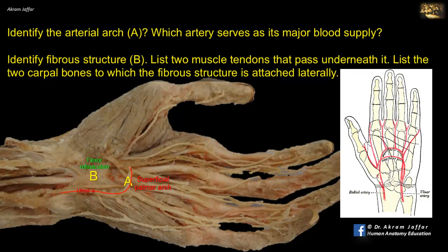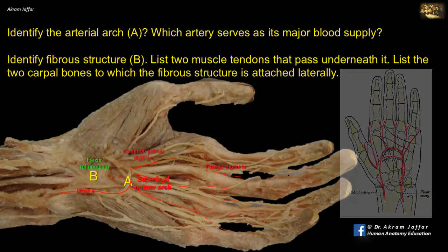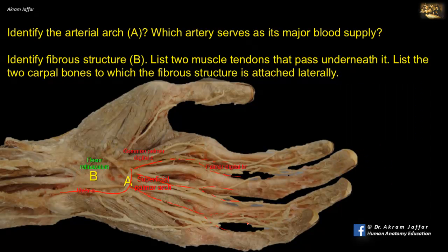The arch gives off common palmar digital branches, which divide to give palmar digital branches along the sides of the fingers. B is the flexor retinaculum, a thickening of the deep fascia of the wrist. Note that it is located in the palm of the hand and not under your wrist watch strap as you might expect.